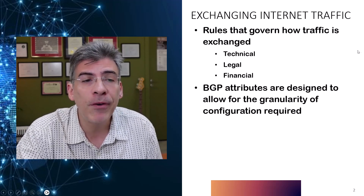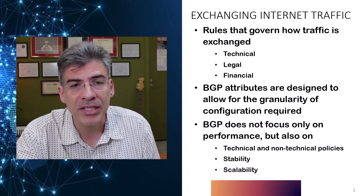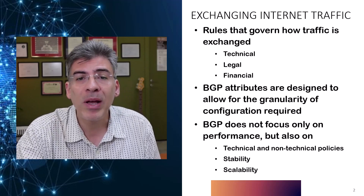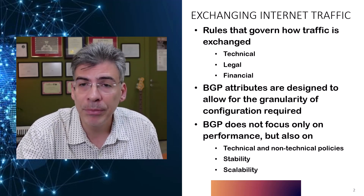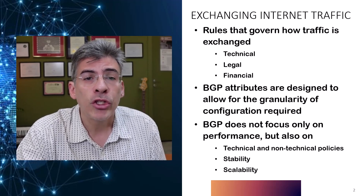BGP does not only focus on performance, but also on policies—both technical and non-technical—as well as stability and scalability at a worldwide scale. Where IGPs are designed for routing within an autonomous system, often within an enterprise network, BGP is primarily used for routing between autonomous systems, meaning it must manage the vast global internet routing table. So BGP is not just about the shortest or most efficient route—all of these other parameters must be taken into account when deciding how to route traffic on the internet.